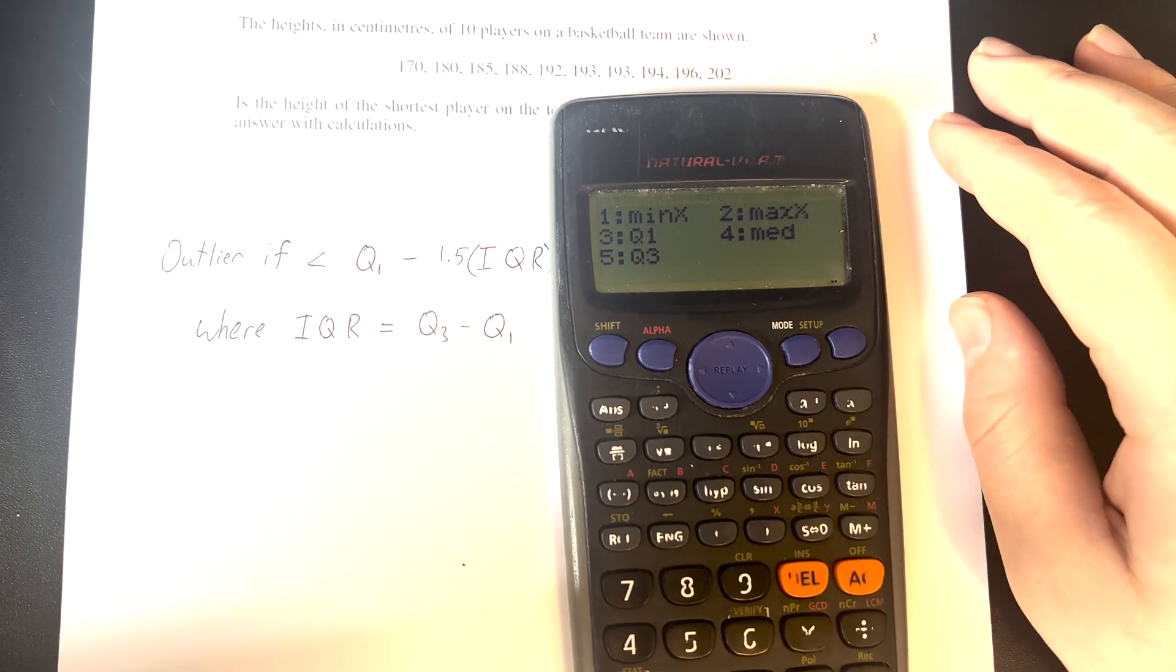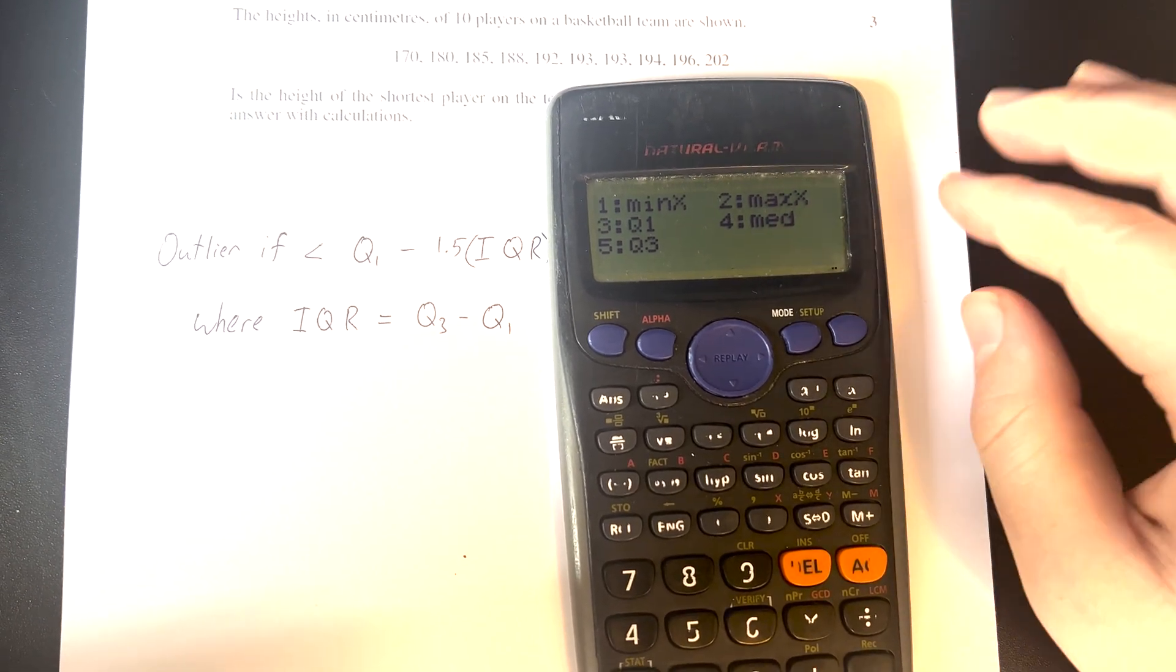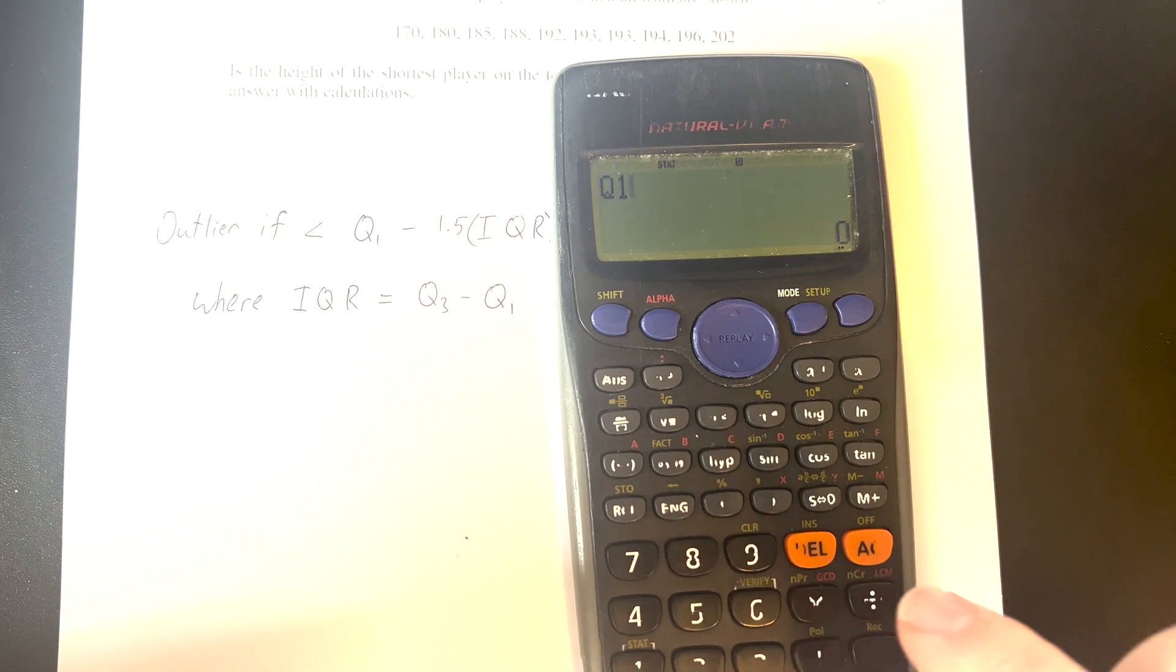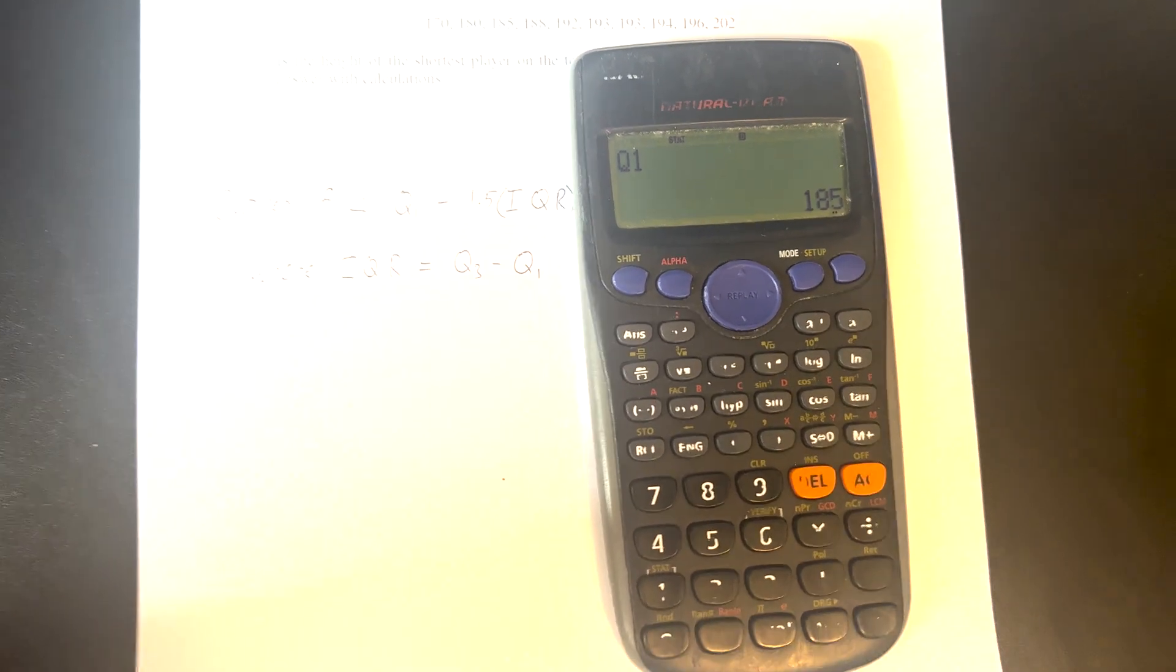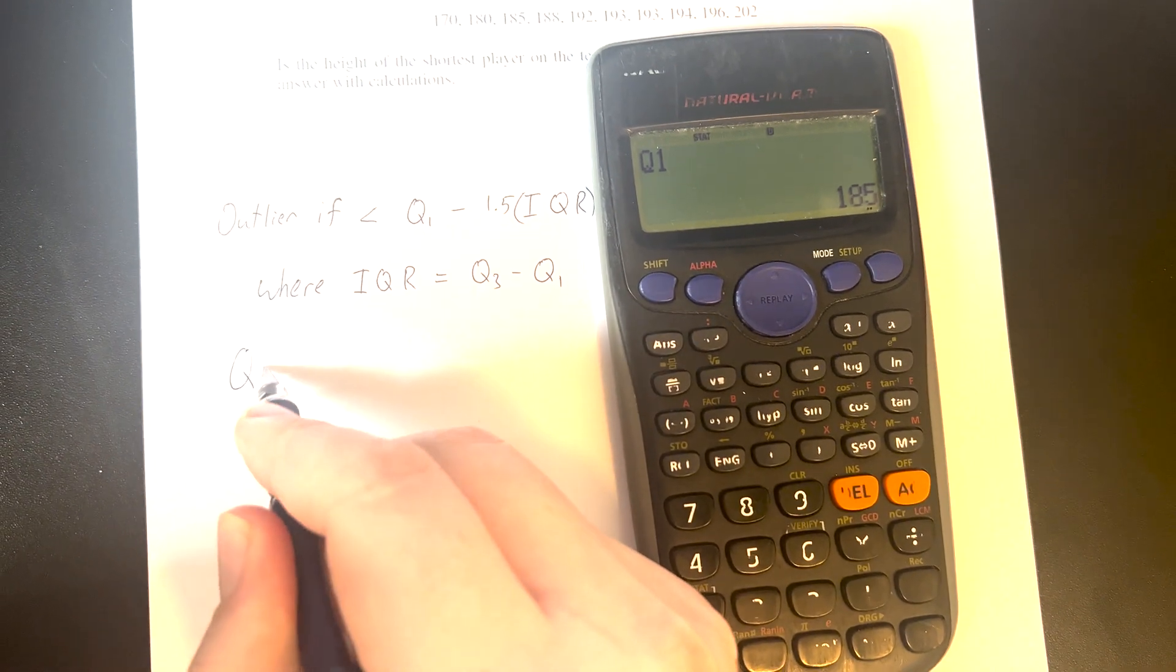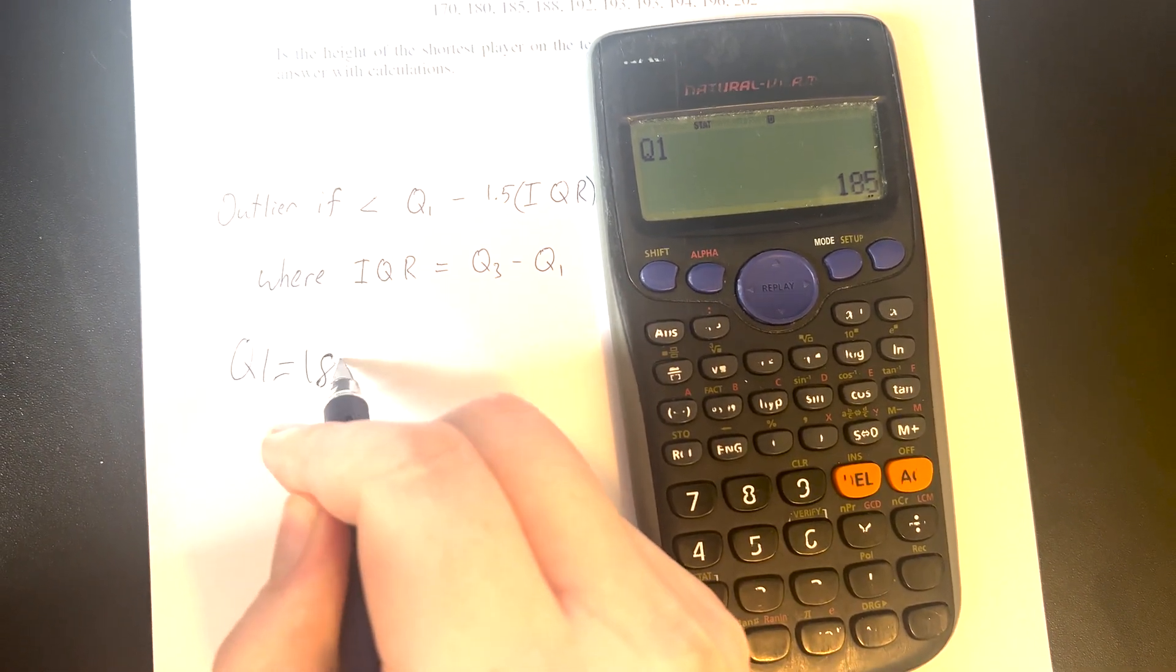Option 3 gives us the first quartile, so that's what we're looking for here. We'll press that. Now it will show us Q1. Let's press equals, and we see that Q1 gives us a value of 185.